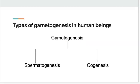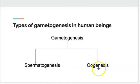What are the types of gametogenesis in human beings? It has to be the process by which males form sperm and the process by which females form ova or eggs. So gametogenesis can be seen in two lines: spermatogenesis — 'sperma' for sperm, 'genesis' for creation — and oogenesis — 'o' for ova, 'genesis' for creation. So male and female gametogenesis. Today we're just going to be looking at spermatogenesis.